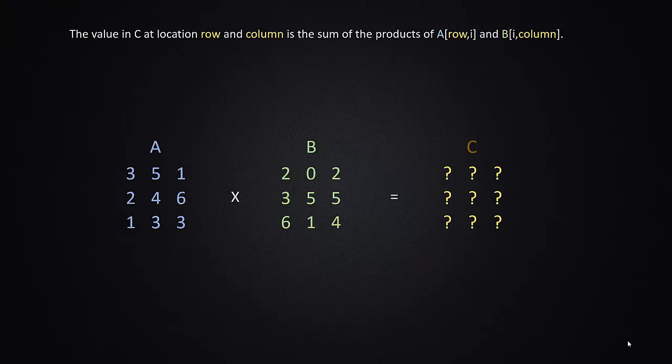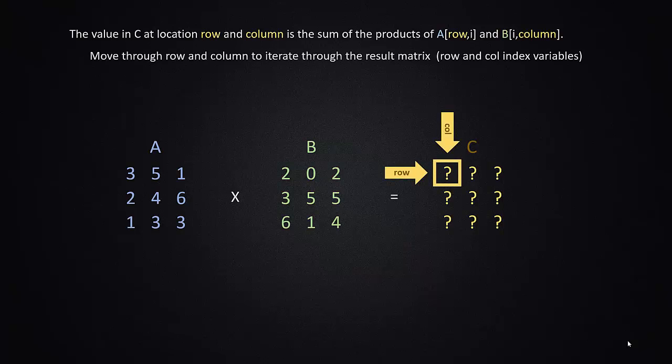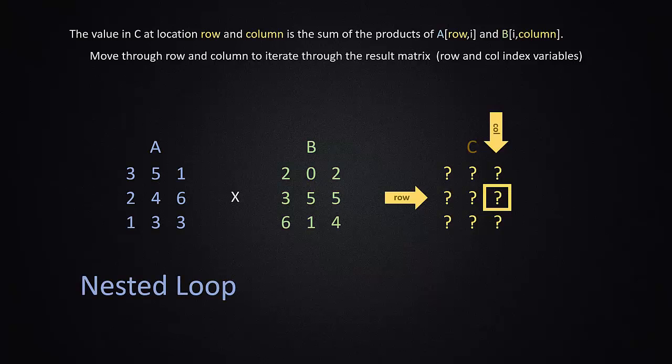So keeping that in mind that the value at this location C is going to be dependent on the row and column values, we're going to work our way through the matrix C by varying row and column. We will let column advance across and then when it gets to the end we want to reset it back and move row down one and continue that stepping process. This is typically done as a nested loop in programming where we have one value that resets every time another value increments.